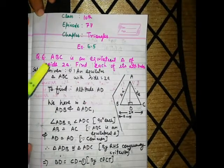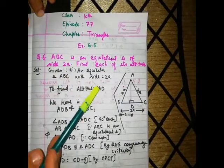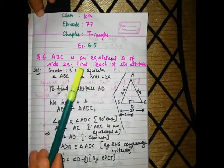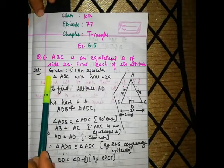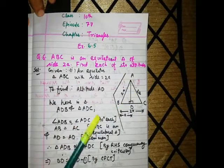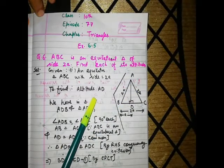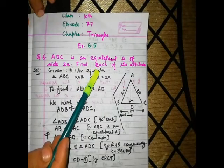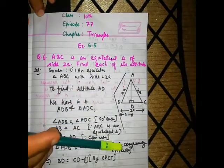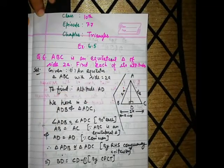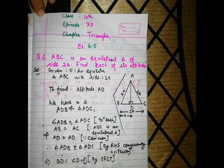Question number 6: ABC is an equilateral triangle of side 2a. We have to find each of its altitudes. We know that in an equilateral triangle all 3 altitudes are equal, so we will find just one altitude.